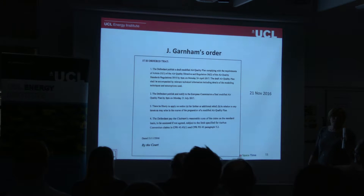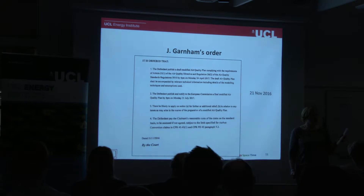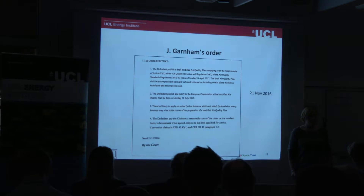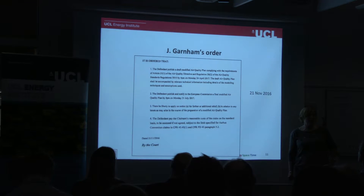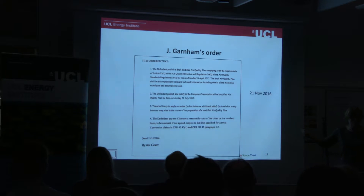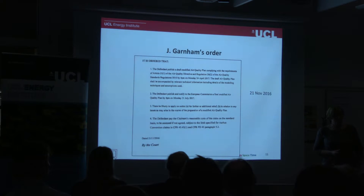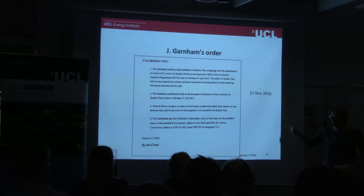The order that the judge came up with was that they would have to amend the plan — not quash the existing plan but amend it. They had to have a draft new plan by the 24th of April next year and a final plan by the 31st of July. Client Earth will have access to all the technical details behind the development of the plan. One amusing thing was that the QC for DEFRA said they couldn't do it before September because everybody's on holiday in August, and the judge said he would give absolutely no weight to that argument whatsoever.